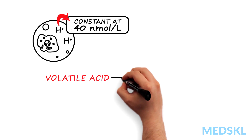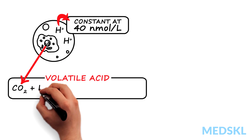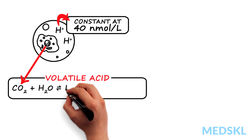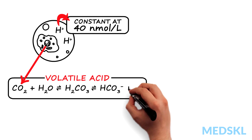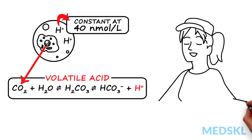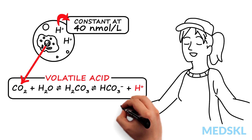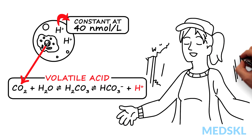Volatile acid forms when carbon dioxide produced by cellular respiration combines with water and forms carbonic acid. Pulmonary alveolar ventilation eliminates carbon dioxide from our body and prevents the accumulation of roughly 15,000 millimoles of carbonic acid produced daily.